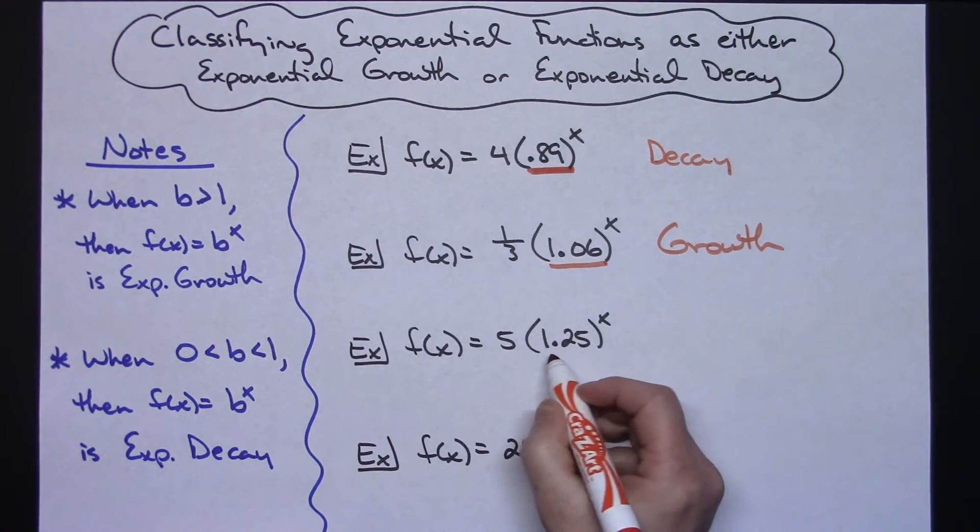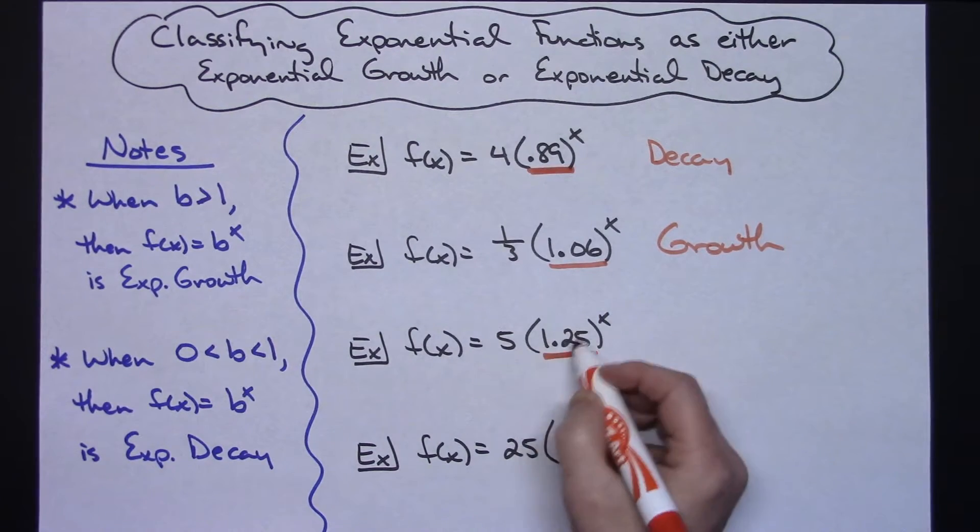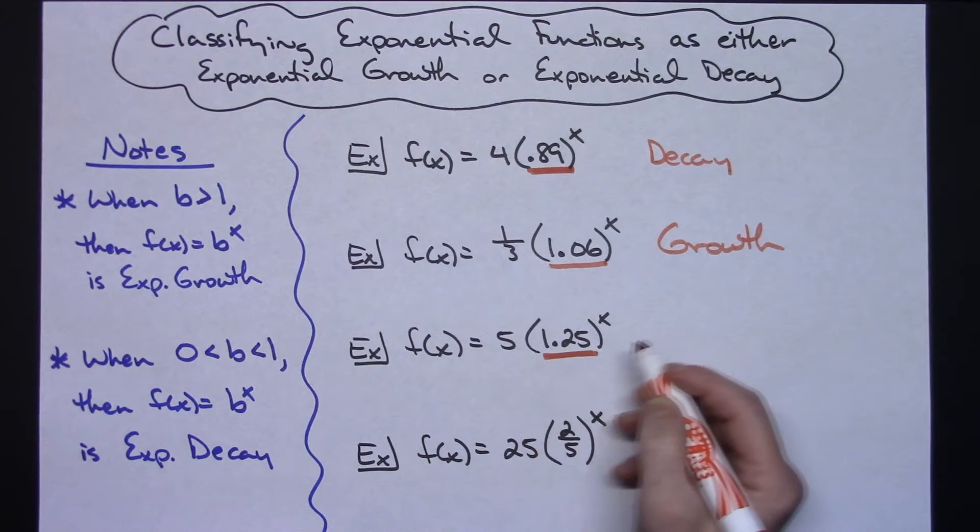Looking at the third example here again the 5 has no bearing in it. You're going to look right here because that 1.25 is the base, the x is the exponent there, and again that base is greater than 1 so this is an exponential growth.